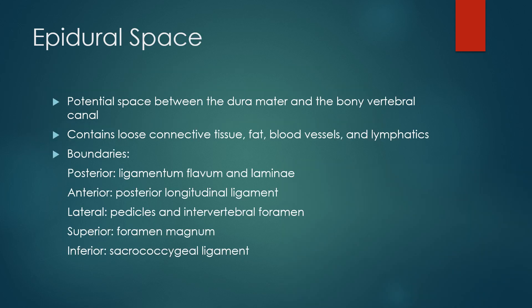The epidural space is the potential space between the dura mater and the bony canal. It contains loose connective tissue — mostly adipose — blood vessels, and some lymphatics. The boundaries of the epidural space are frequently tested: posteriorly, ligamentum flavum and the lamina; anteriorly, the posterior longitudinal ligament; laterally, the pedicles and intervertebral foramen; superiorly, the foramen magnum; and inferiorly, the sacrococcygeal ligament.